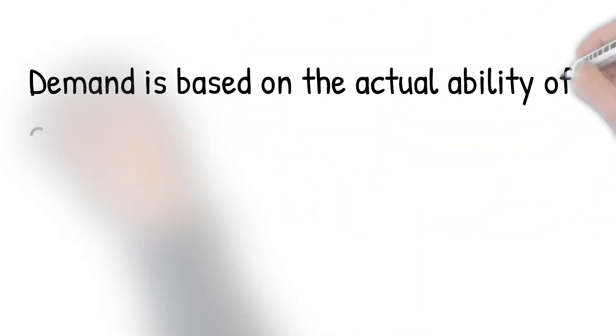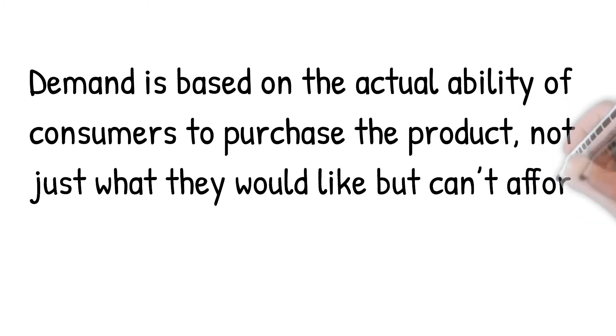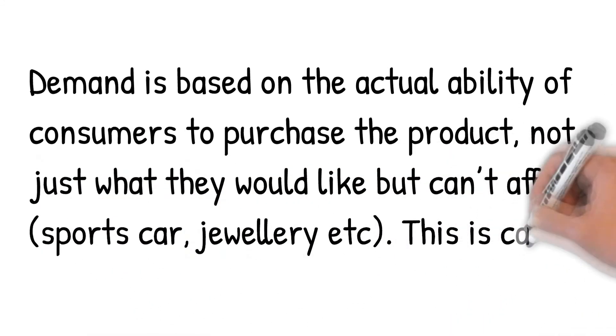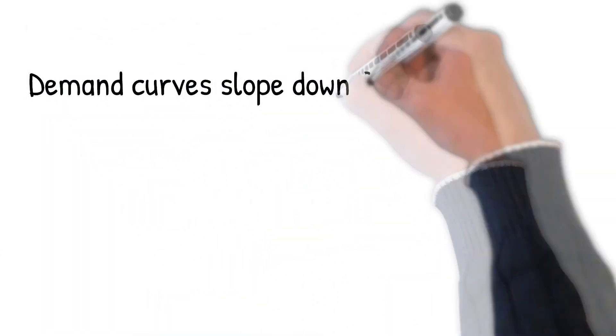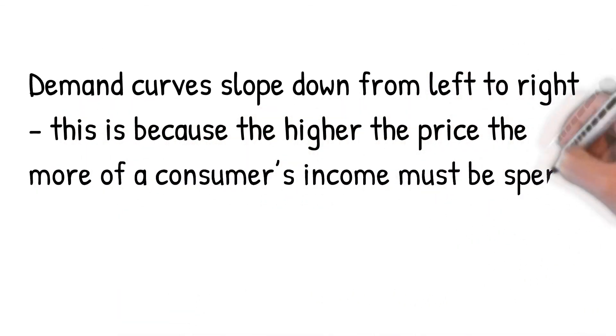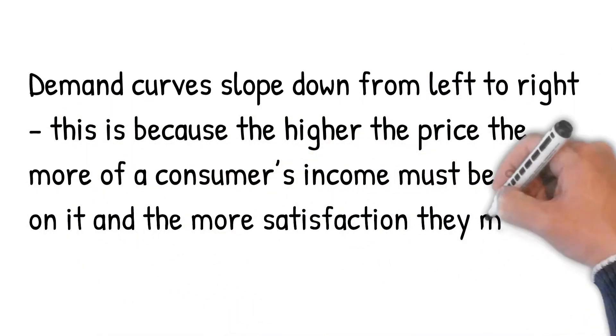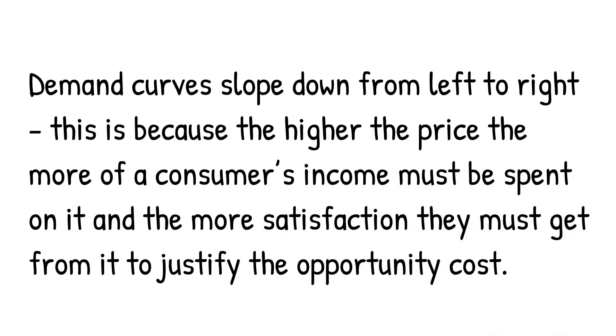Demand is based on the actual ability of a consumer to purchase the product, not just what they would like but can't afford, like a sports car or jewelry. This is called effective demand. Demand curves slope down from left to right. This is because the higher the price, the more of the consumer's income must be spent on it, and the more satisfaction they must get from it to justify the opportunity cost.